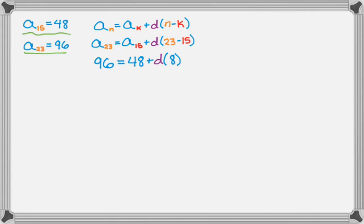A little algebra here. 96 - 48 = 48. So 8d = 48, which means d = 6.